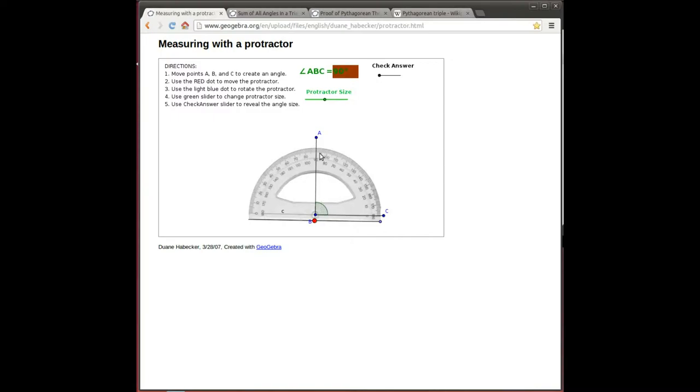90 degree angle and a right angle are synonymous terms. Anything less than a right angle is called an acute angle. Anything bigger than a right angle is called an obtuse angle.